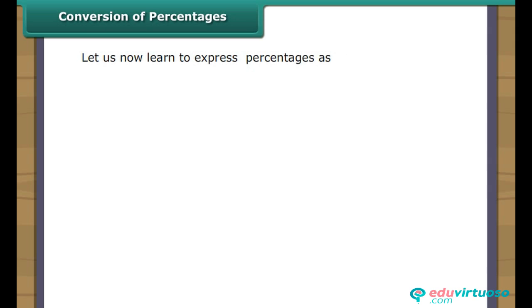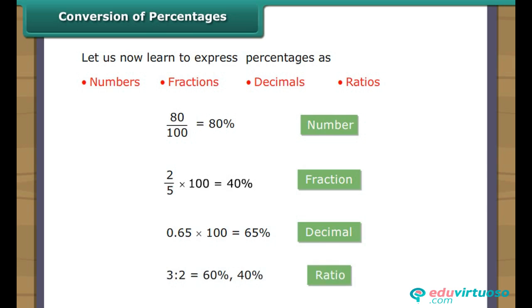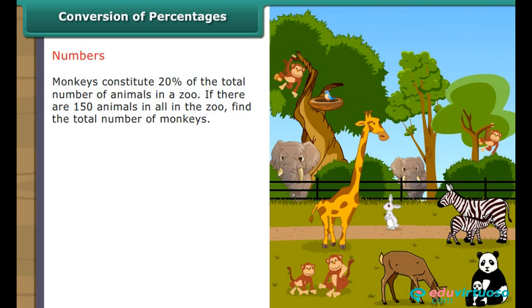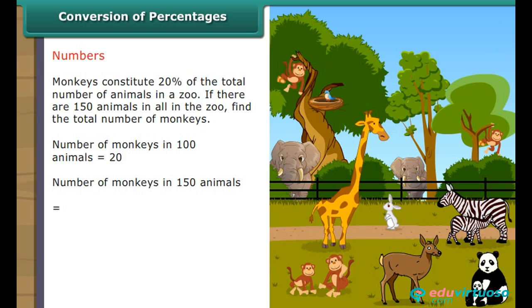Conversion of percentages — Numbers: Monkeys constitute 20% of the total animals in a zoo. If there are 150 animals in all, find the number of monkeys. Monkeys in 100 animals = 20. Monkeys in 150 animals = 20/100 × 150 = 30. There are 30 monkeys in the zoo.